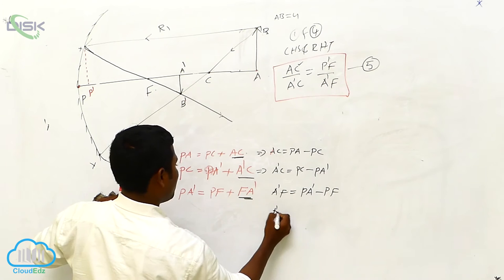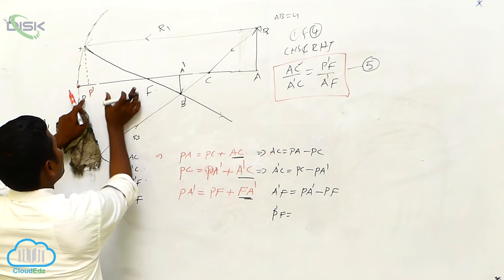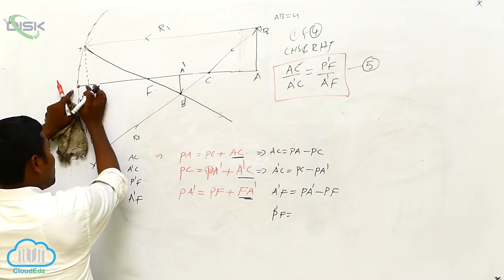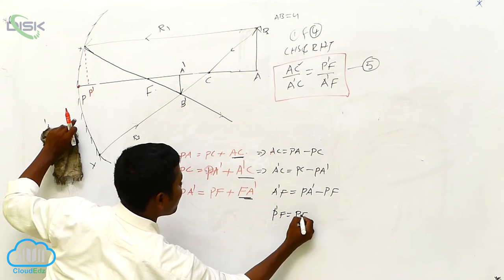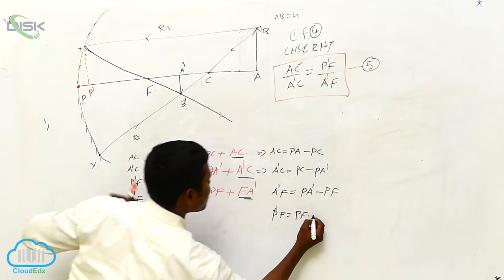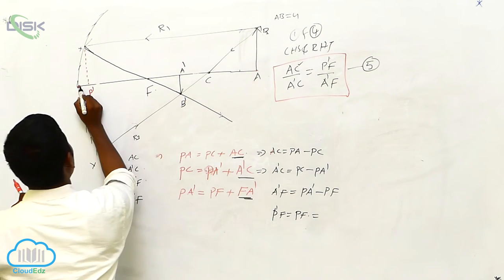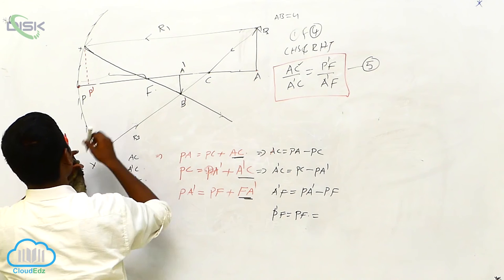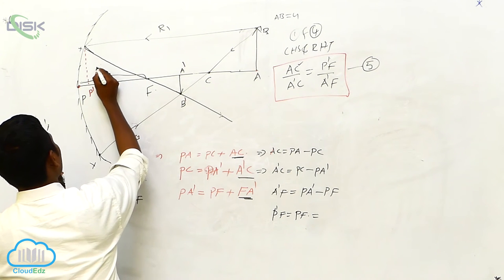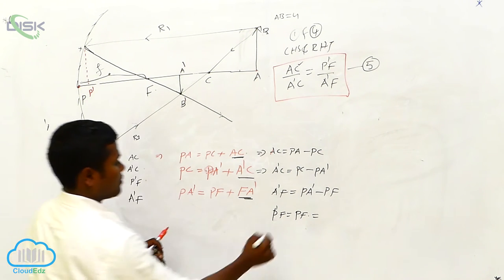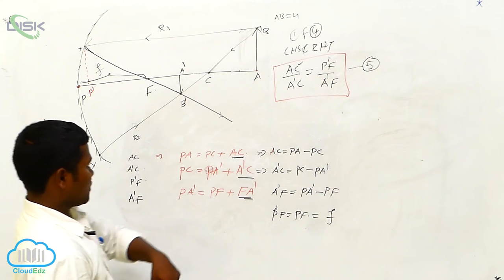P dash F is equal to PF. Because of paraxial ray, P dash F is equal to PF. PF — how much length is there? Small f. So I got all the values: AC, A dash C, A dash F, and P dash F.